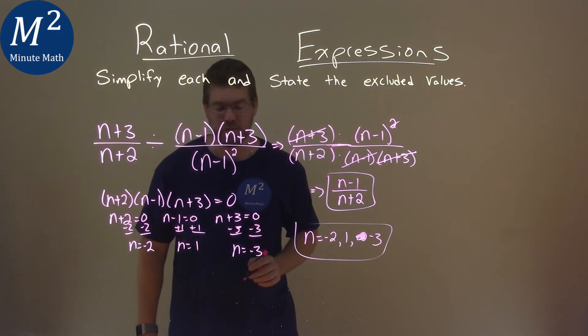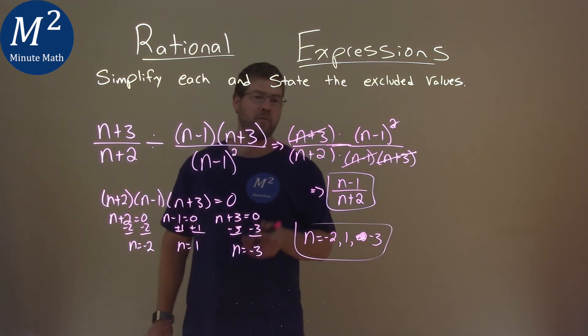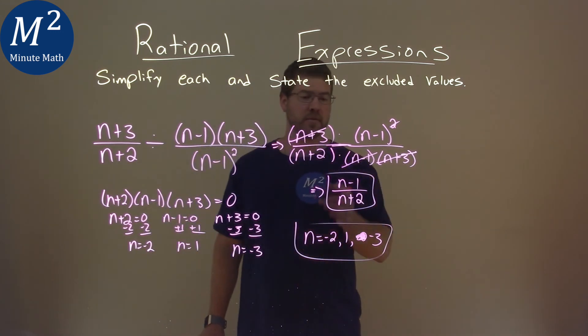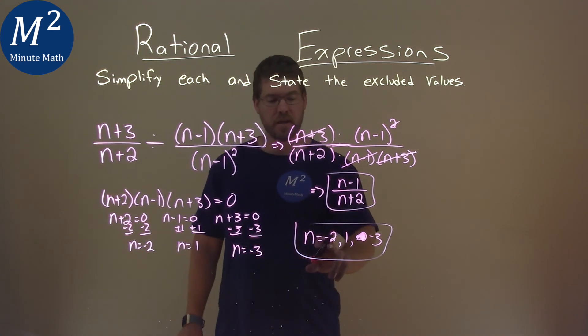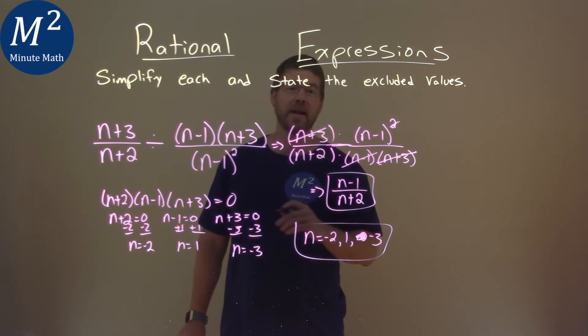And so our final answer here is a simplified version, or simplified expression, n minus 1 over n plus 2. And our excluded values are negative 2, positive 1, and a negative 3.